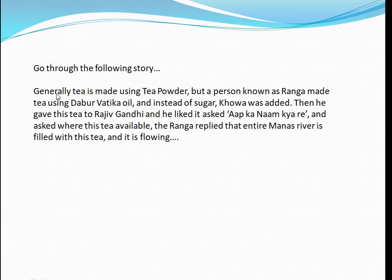Generally tea is made using tea powder, we know that. But assume that a person known as Ranga — a different person Ranga — he made tea using Dabar Vatika oil. That means instead of milk and instead of tea powder, he used Dabar Vatika oil, and instead of sugar, he added kova.